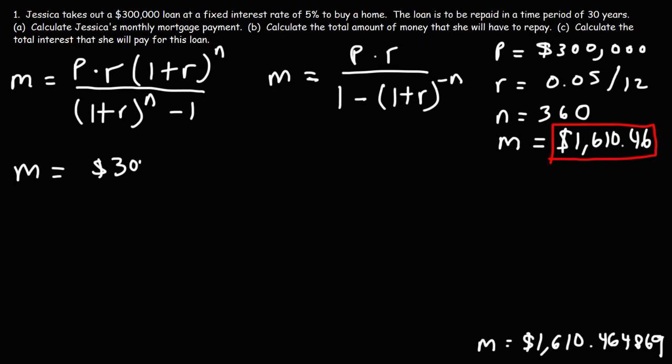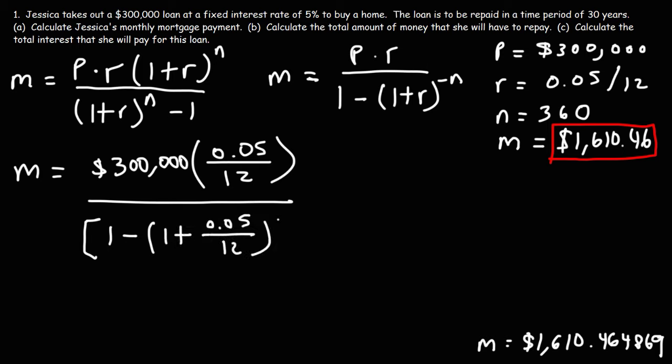So let's take the principle of 300,000 and let's multiply it by R, which is 0.05 over 12. And then for the bottom, you want to introduce a set of brackets if you're going to use a calculator. So it's 1 minus 1 plus 0.05 raised to the 12. And then, I mean, divided by 12, but raised to the negative 360. So don't forget to include the negative sign. It's very important.